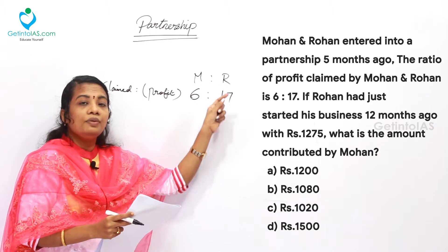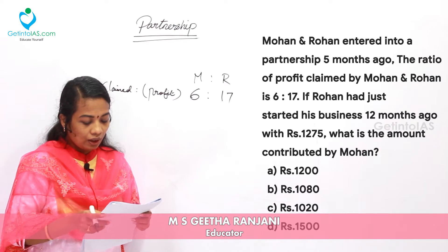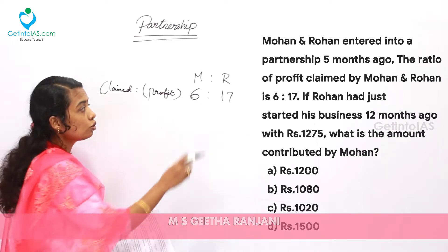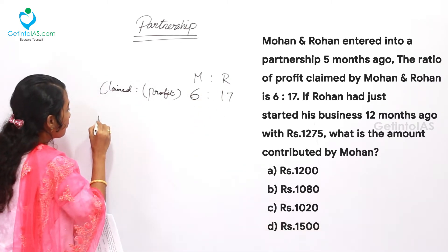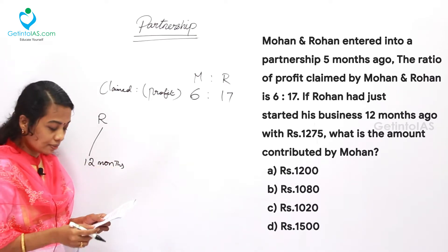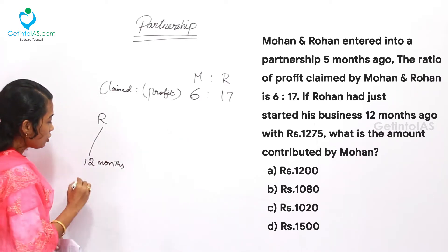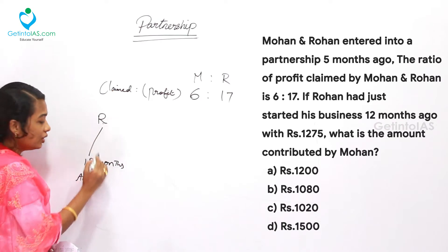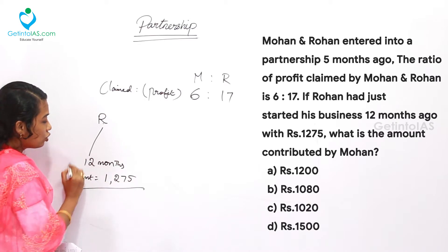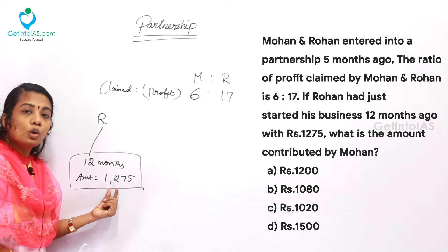Rohan must have invested the highest amount or the highest time. Here, Rohan had started his business 12 months ago, so the time period of Rohan is 12 months. The amount invested by Rohan is Rs. 1275, and he also invested for 12 months.